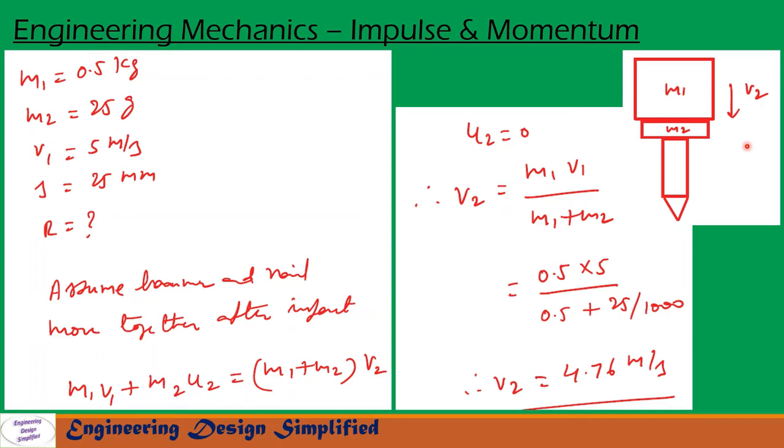So let us apply conservation of momentum equation for this system. So we can write m1·v1 + m2·u2 = (m1 + m2)·v2. So this is the initial momentum of hammer, this is the initial momentum of nail, and this is the combined momentum of hammer and nail together after impact. So here nail will be stationary initially, so u2 will be zero.